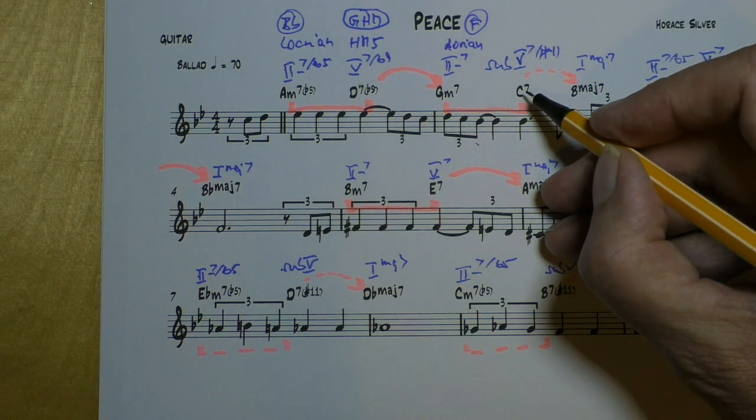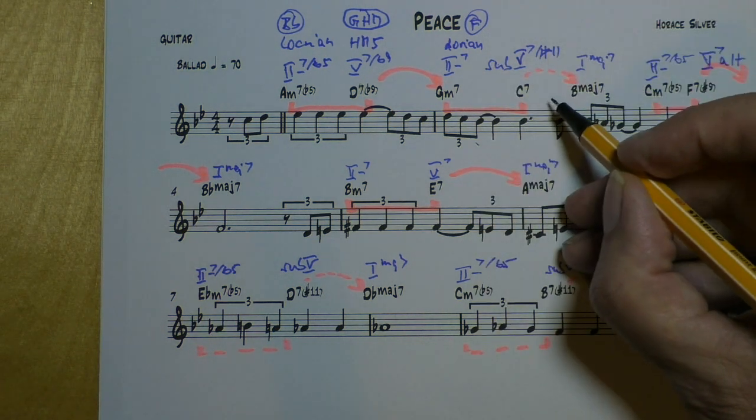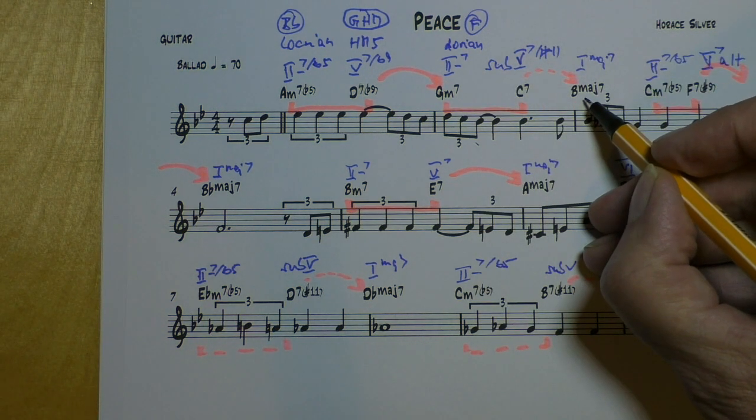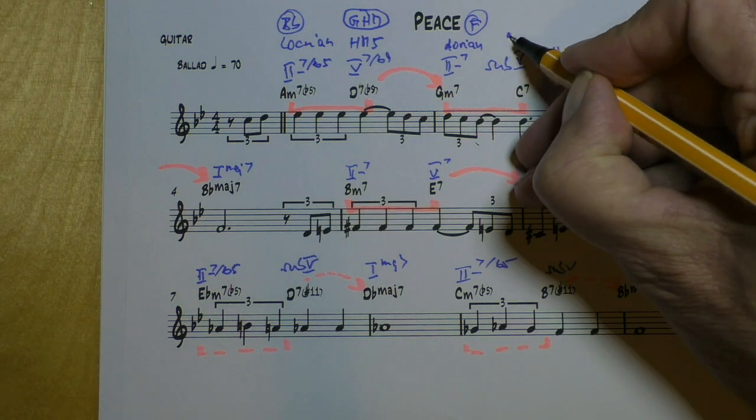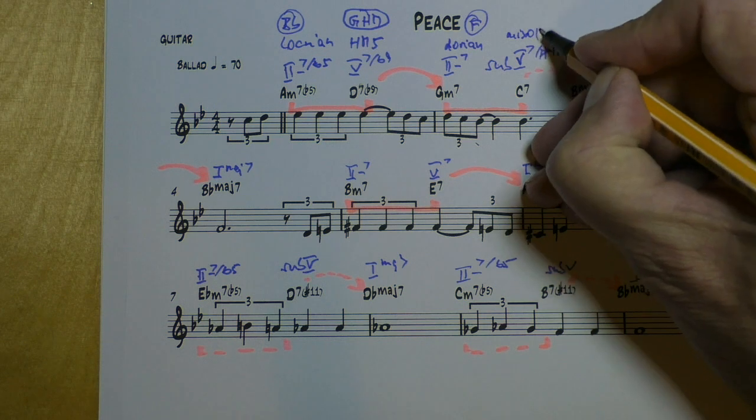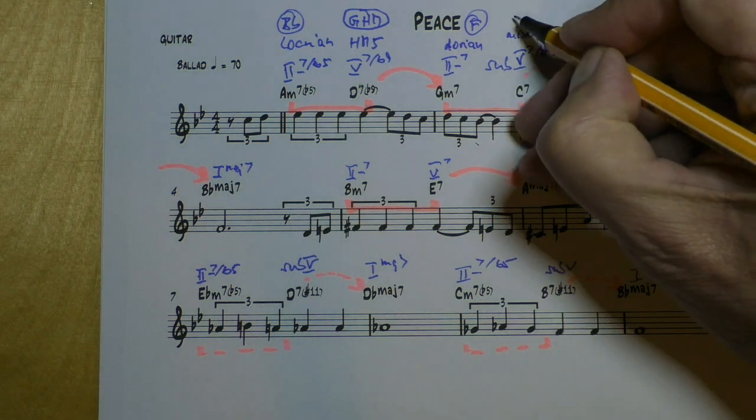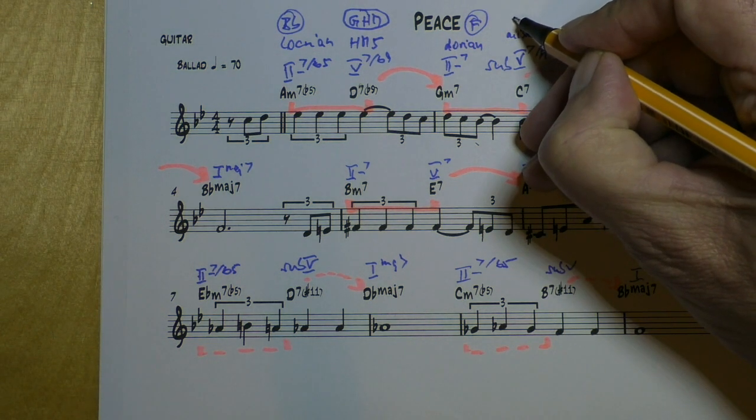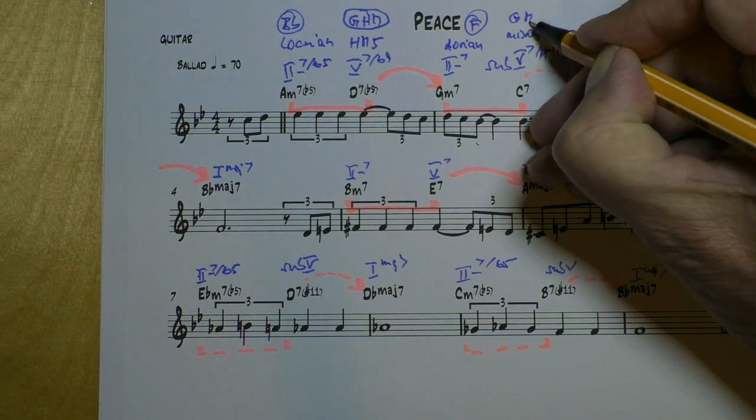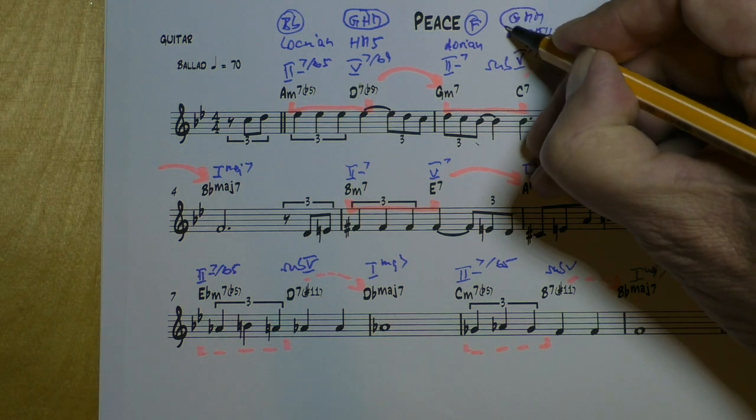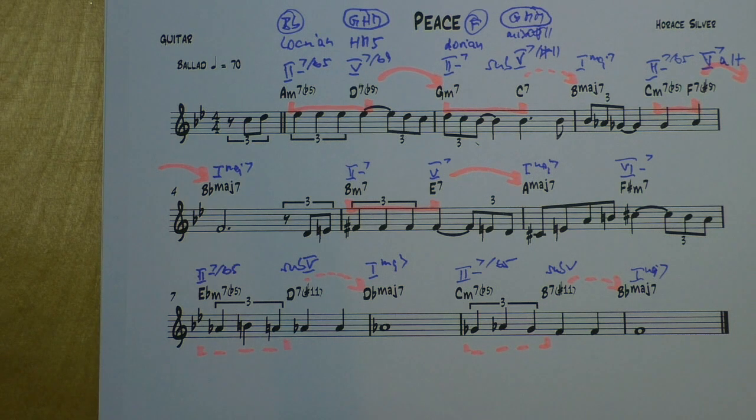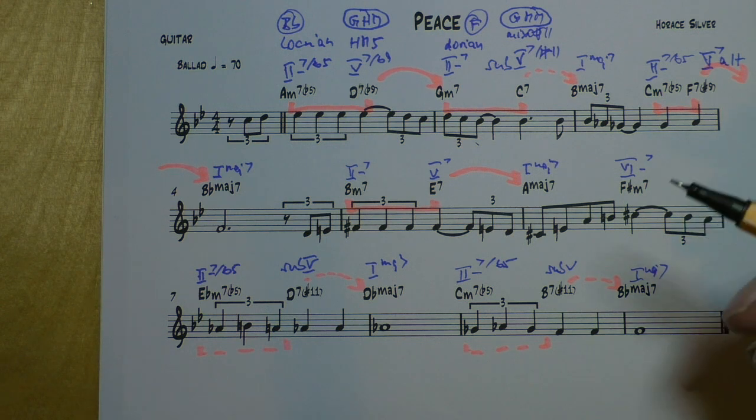That C7 is not a Mixolydian, because it leads like a sub-5 to the next one. So, that's a Mixolydian sharp 11 chord. And that comes from melodic minor, from the 4th degree of melodic minor. So, it's G melodic minor. Check that out. G melodic minor, 4th degree is C7, Mixolydian sharp 11 scale. If you're not familiar with that, check out my lesson on the melodic minor scales.